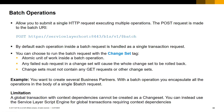You can send, for example, a single batch request to create several business partners. Please note that change sets allow you to create global transactions containing several operations, but the different operations cannot have context dependencies between them. You can use the service layer script engine for this purpose instead. Please check the specific session in this e-learning on the script engine topic.